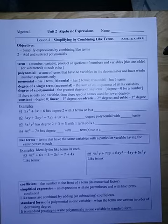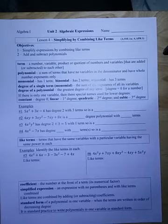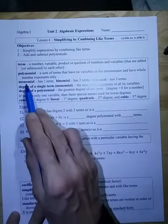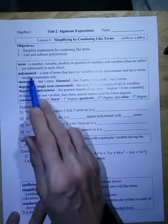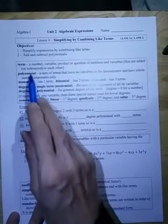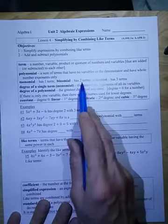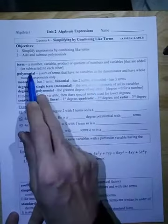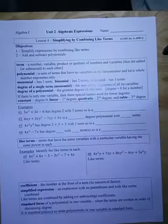In a polynomial, there can't be any variables in the denominator, and they have to have whole number exponents only — no negative exponents, which would put them in the denominator. A monomial is a polynomial with one term, a binomial is a polynomial with two terms, and a trinomial is a polynomial with three terms.